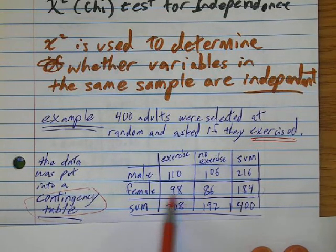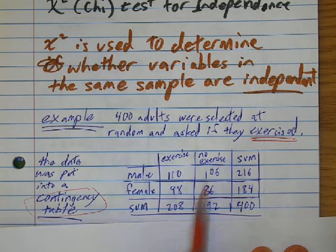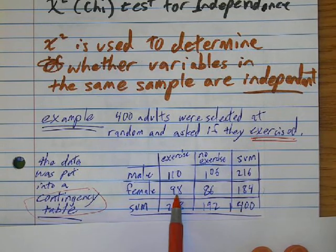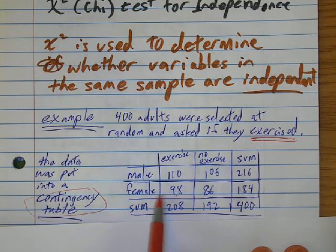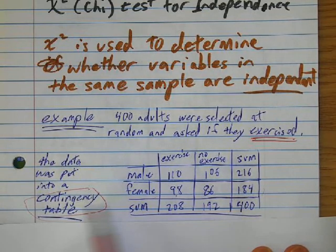So 208 is all the people that exercised. 192 is all the people who didn't exercise. 98 represents women that exercised. Okay, so this is our contingency table.